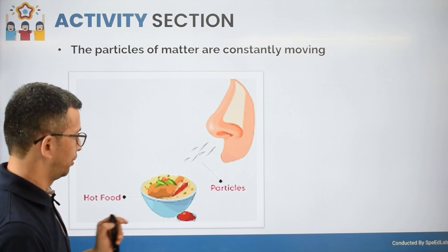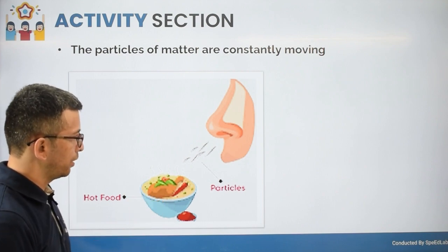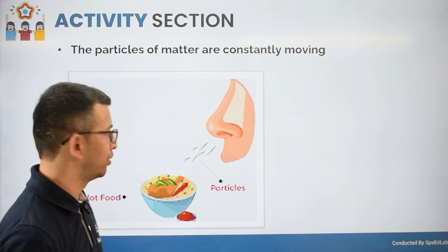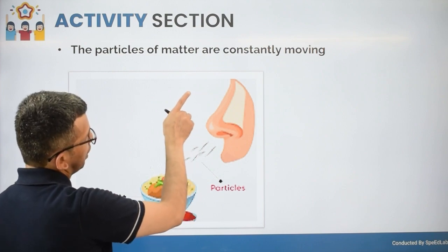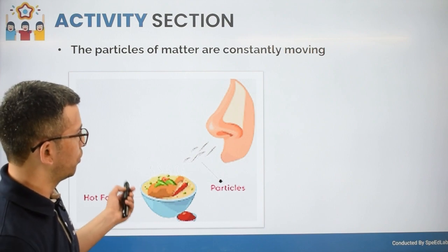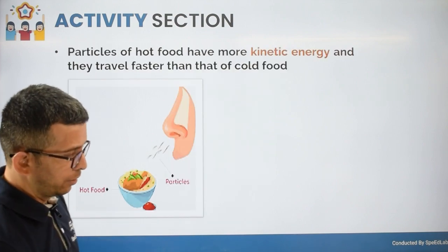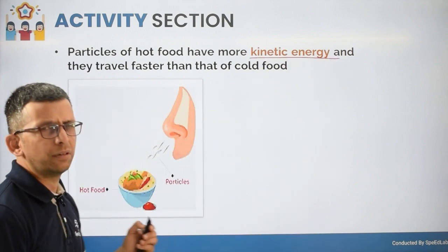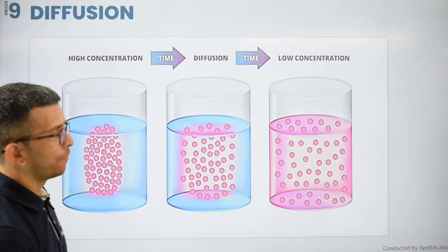Here is a relatable example: when your mom prepares hot food in the kitchen, you can smell it from another room. The hot food is made of matter, and its particles are constantly moving, reaching your nostrils. Particles of hot food move faster than cold food because their kinetic energy is much higher — providing more energy increases kinetic energy, so particles travel faster.